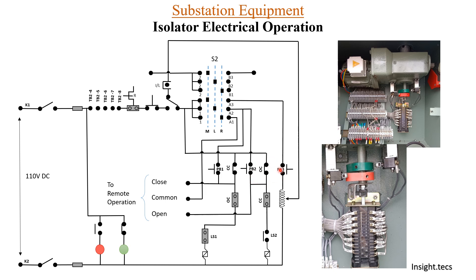Similarly, if you want to open the isolator by pressing the open push button, the NC contact of the close contactor will be operated and will get closed. LS2 will switch and once the isolator is completely open, the contactor is released and the motor stops rotating. This is how local electrical operation occurs using these two push buttons and the NO/NC contacts of OC and CC.